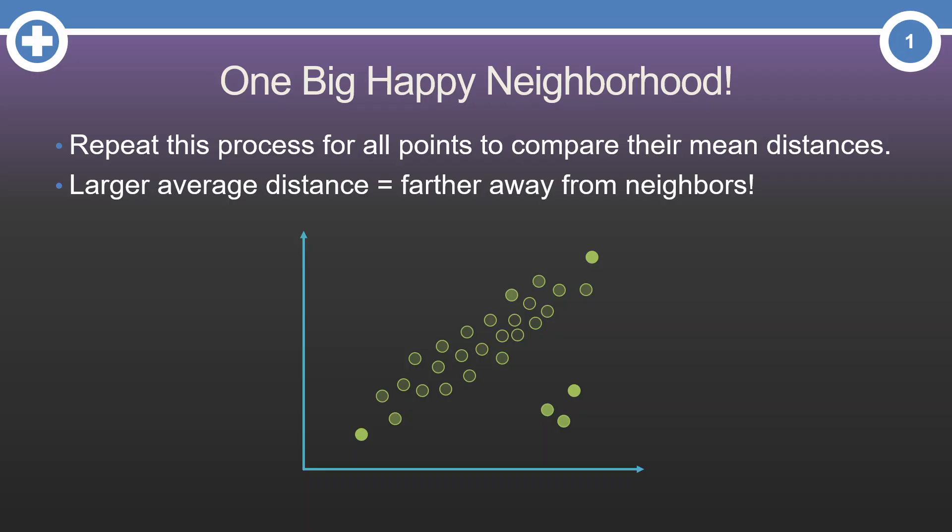Here is the same graph, but each point is highlighted based on the local outlier values. The more saturated points have higher ratios, while the less saturated and more transparent points have smaller ratios. We can see the points on the outside of the data cloud are highlighted as having a higher chance of being local outliers.